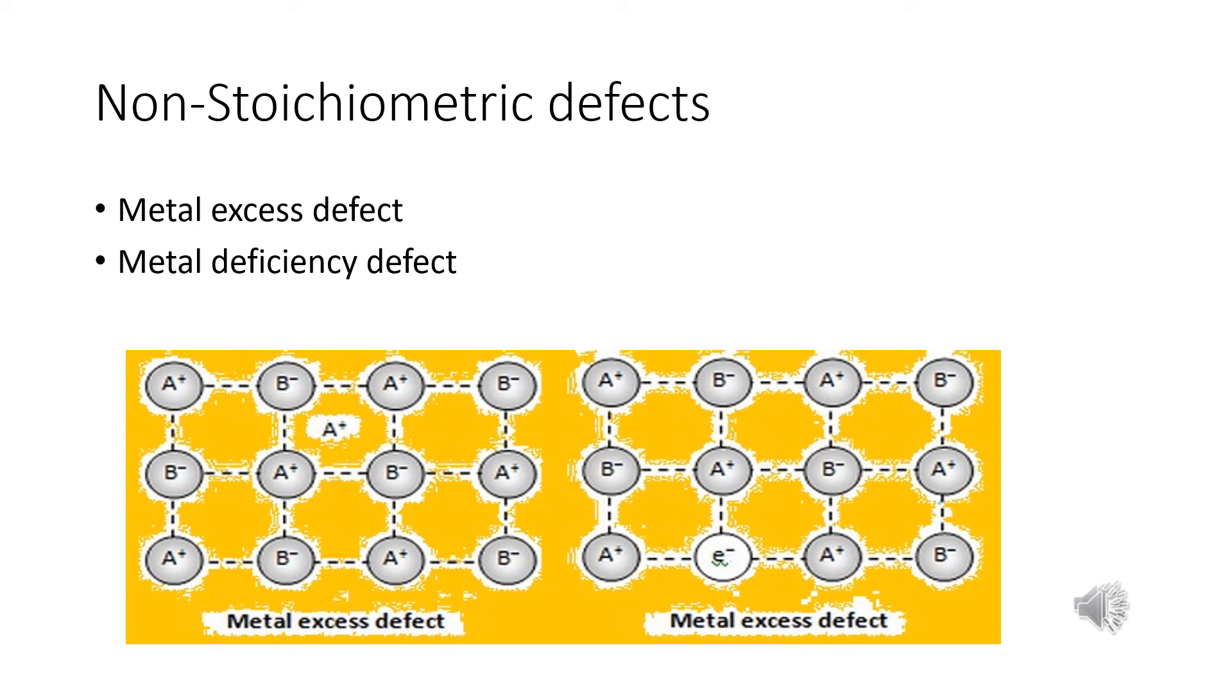First one is metal excess defect. Metal excess defect is also known as anion vacancy defect. Because, this defect arises when a negative ion or anion is absent from its site resulting in excess of metal air. Alkali halide like sodium chloride and potassium chloride shows this type of defect.